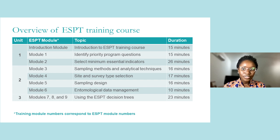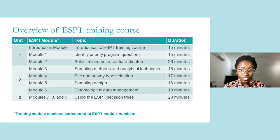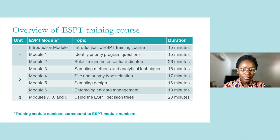After completing this introduction module, we will start with Module 1 on identifying priority program questions, followed by Module 2 on selecting minimum essential entomological indicators. Then we move to Unit 2, which covers Module 3 on sampling methods and analytical techniques, Module 4 on sampling sites and survey type selection, Module 5 on sampling design, and Module 6 on basic data management for entomological data. The final unit, Unit 3, provides an overview on how and when to use the decision trees in Modules 7, 8, and 9, and walks through several examples of working through the full ESPT navigation tree.